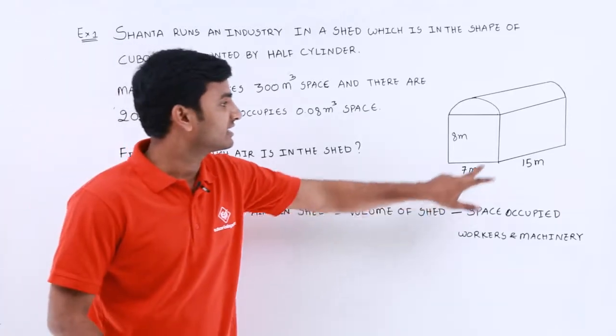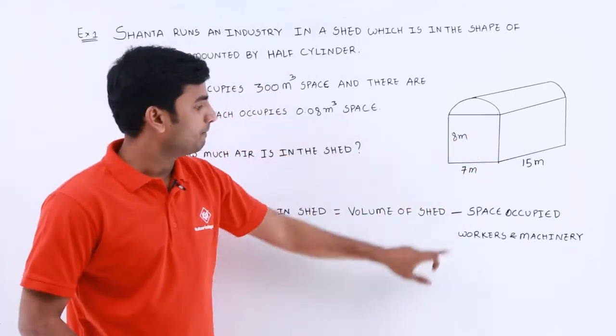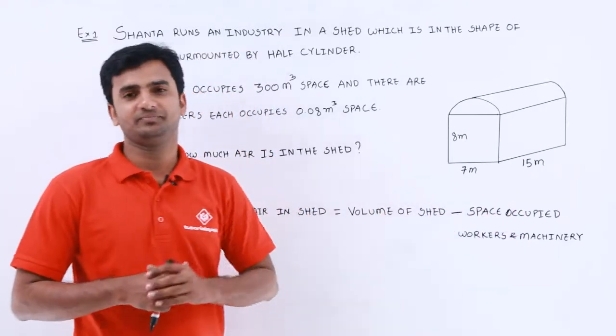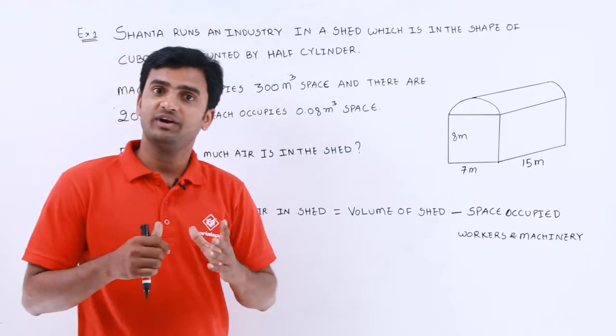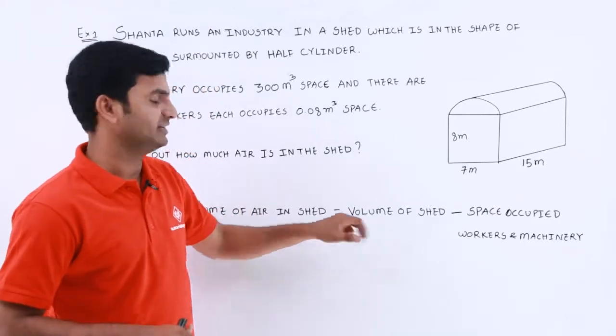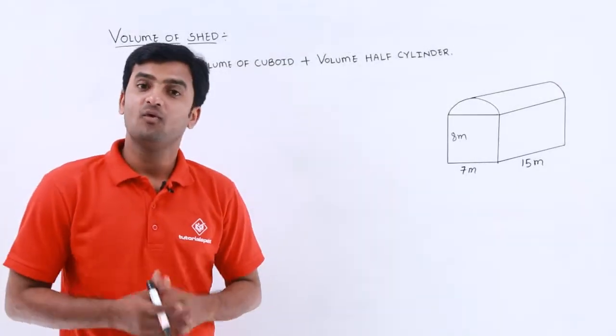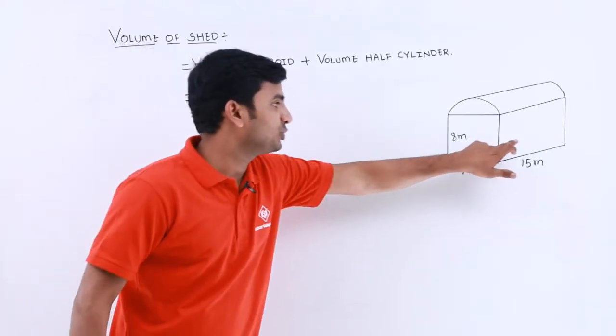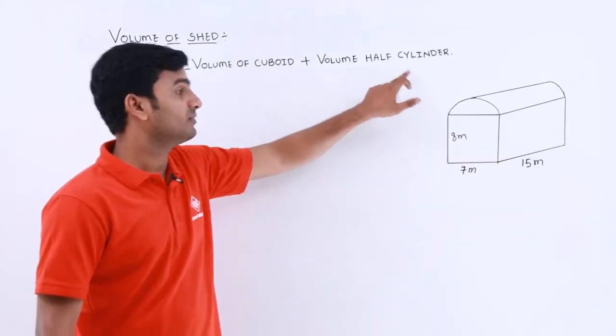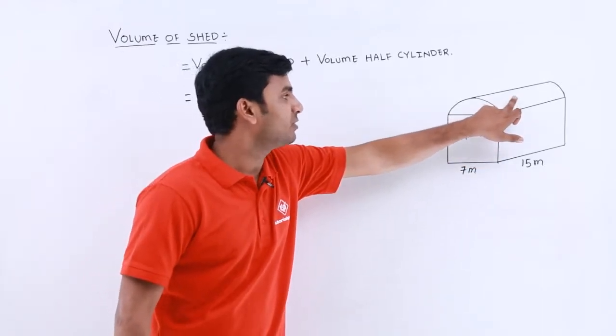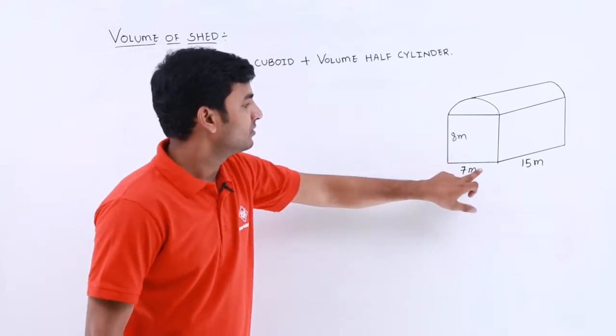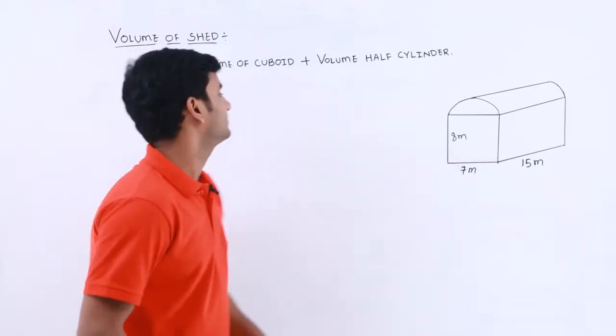To find out the amount of air present in this shed, the formula will be volume of air in shed is equal to the complete volume of this shed minus space occupied by workers and machinery. So first let's find out the complete volume of shed. Here volume of shed will be volume of cuboid plus volume of cylinder.